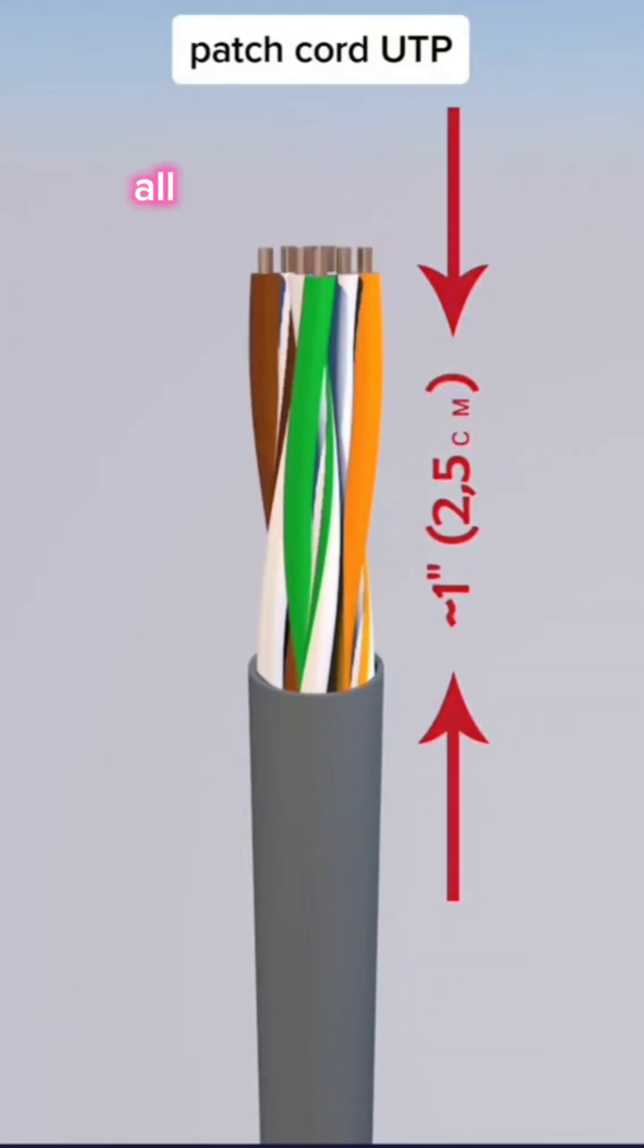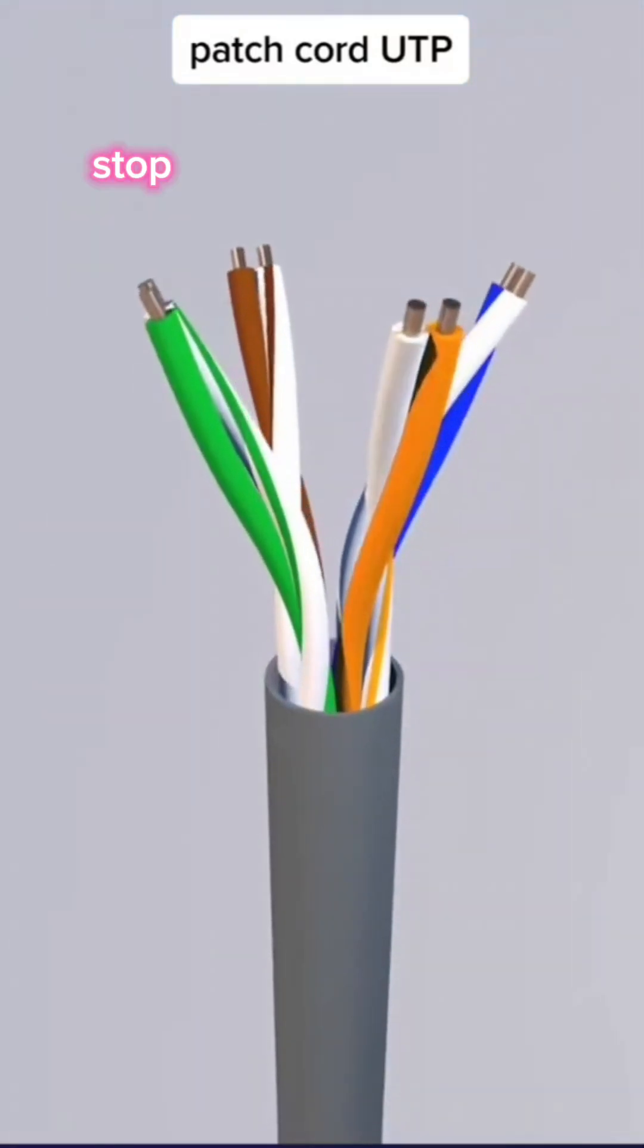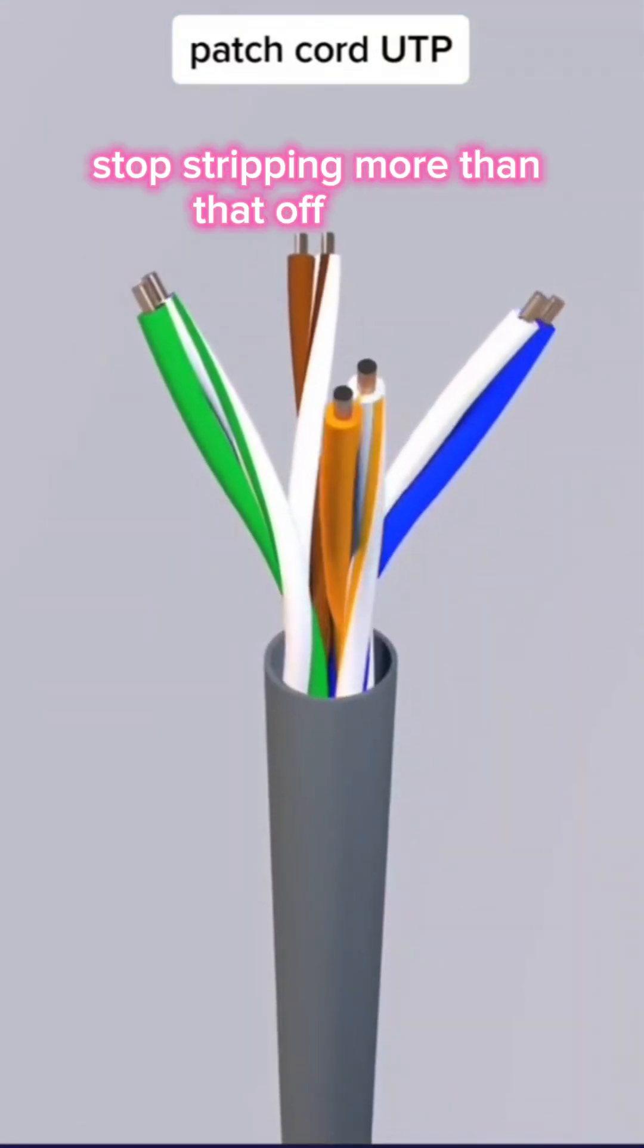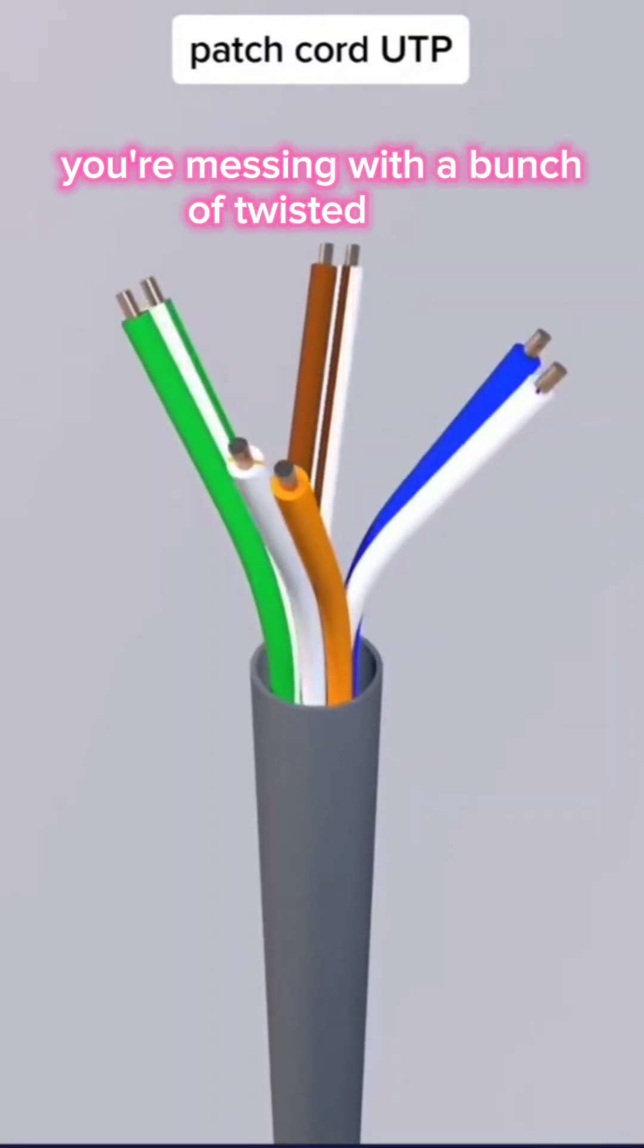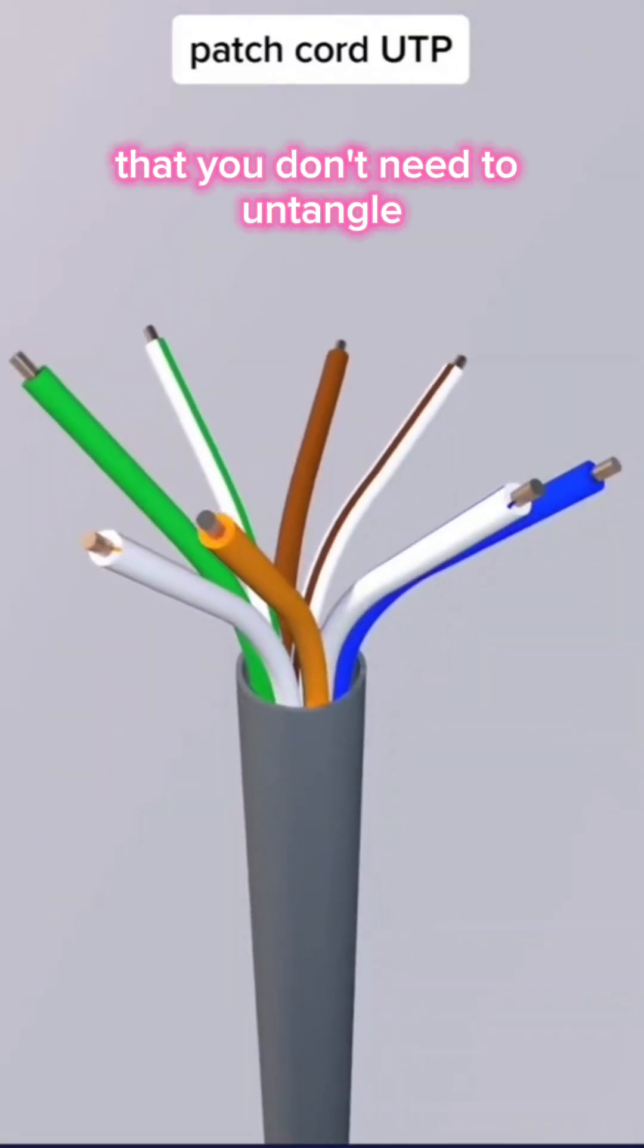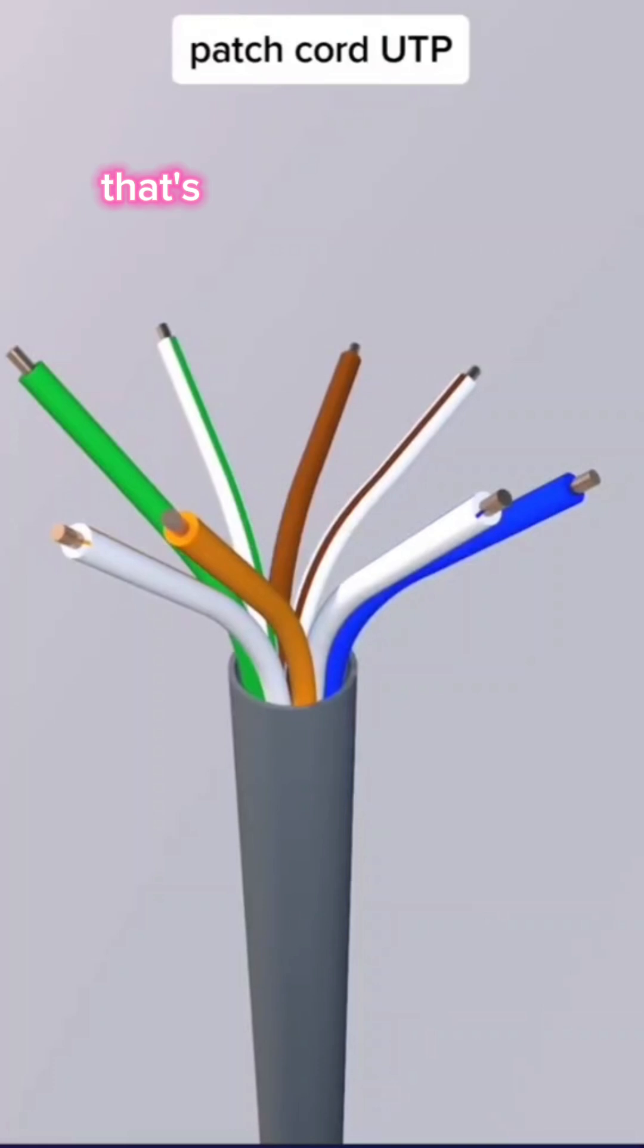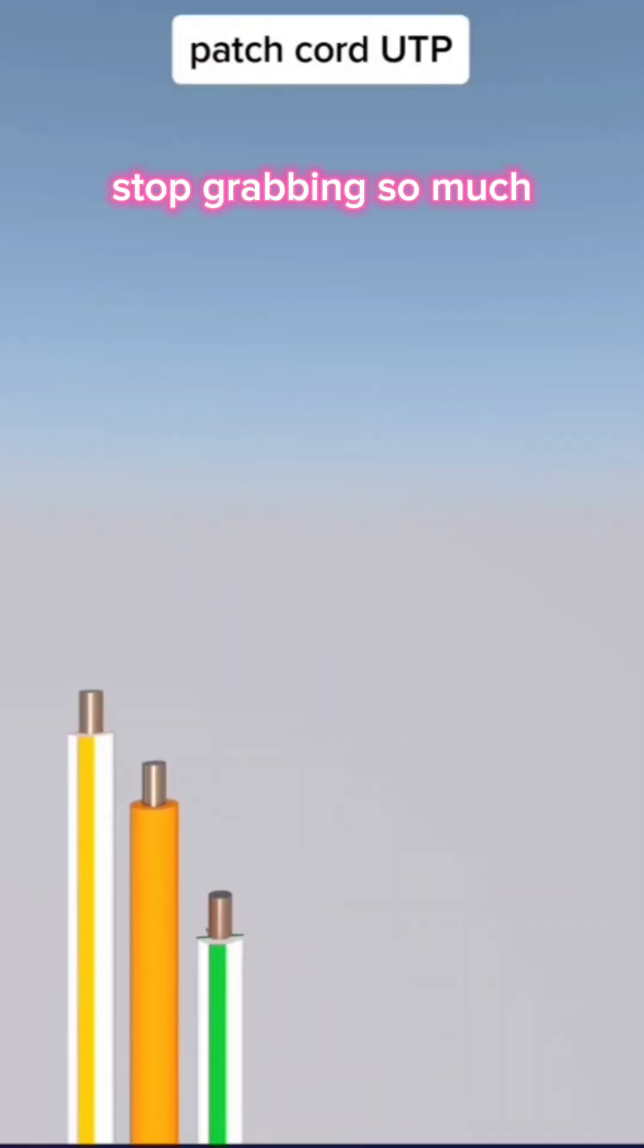Now, starting off, all you need is one inch. Stop stripping more than that off the tip. You're messing with a bunch of twisted pairs that you don't need to untangle. You need one or two twists. That's it, and you're good. Stop grabbing so much.